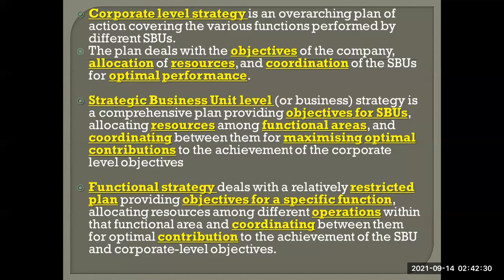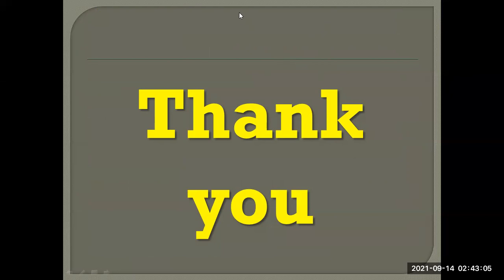Functional strategy deals with a relatively restricted plan providing objectives for a specific function, allocating resources among different operations within that functional area, and coordinating them for optimal contribution to SBU and corporate level objectives. This includes allocating budgets for sales, marketing, advertisement, finance, and HR departments, ensuring coordination and framing policies. These decisions are taken at the functional level. Thank you very much for watching — we are completing levels of strategy and will discuss the next part in the next video.